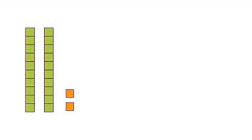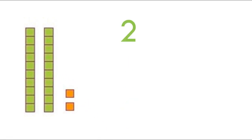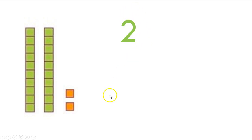Here's our next one. I want you to write down how many tens you see here. Let's count: one, two — there are two groups of tens, so we write two. Now we're going to write how many ones. Remember where you're going to put the ones — this is the ones place and this is the tens place. How many ones do we have? One, two. So there should be a two in the ones place and a two in the tens place.